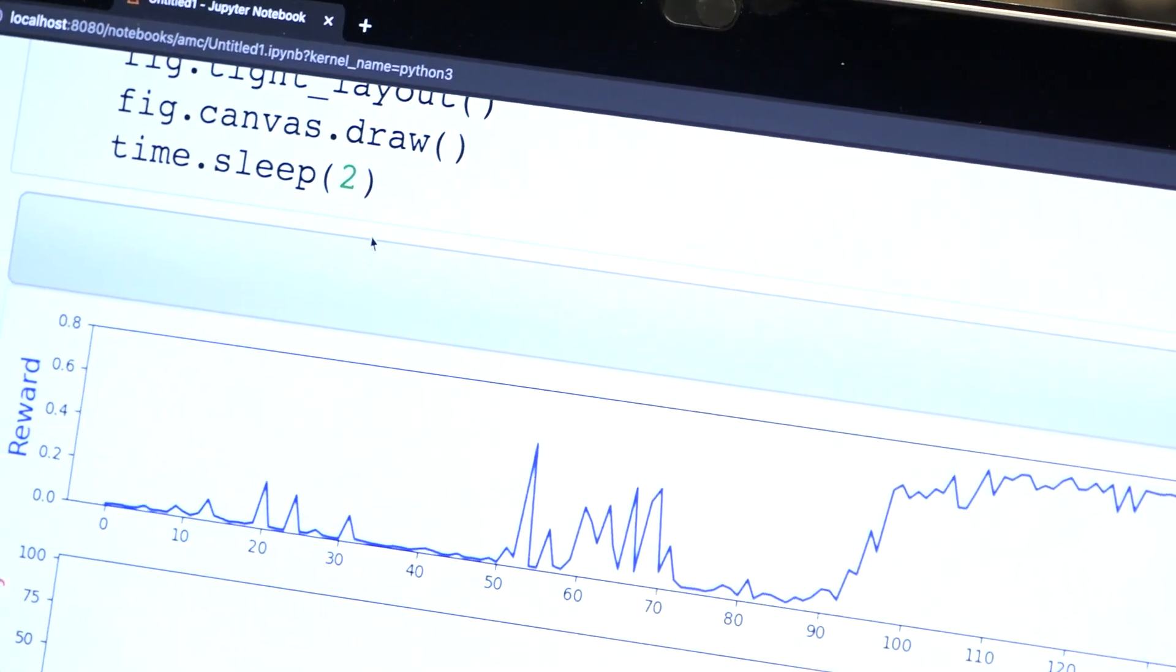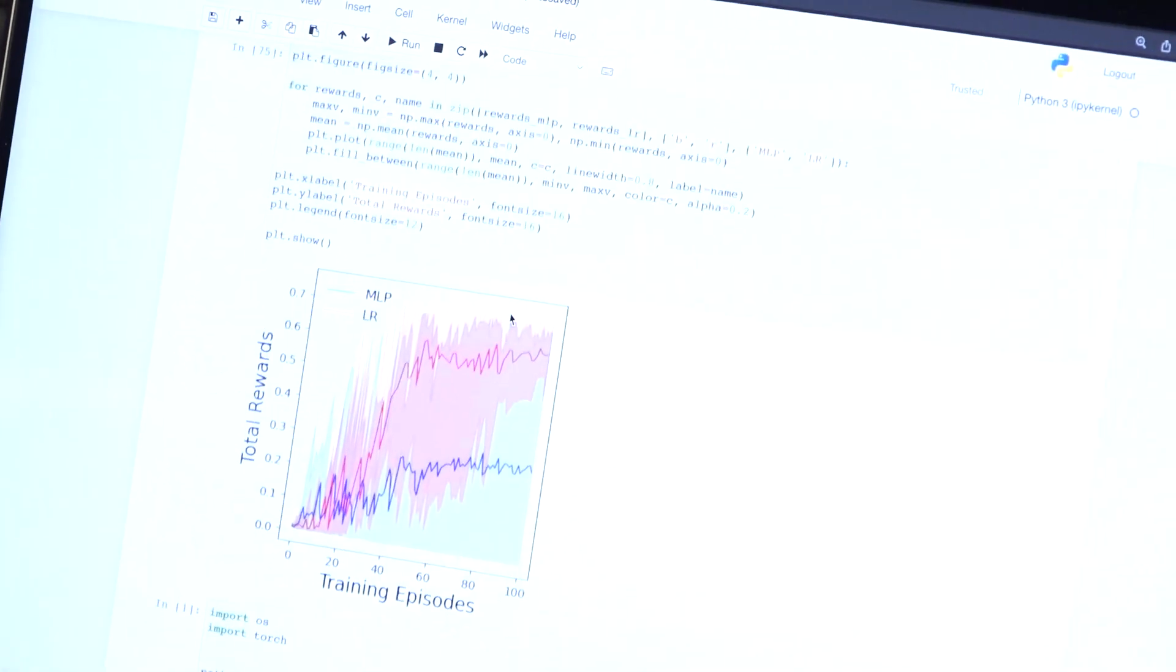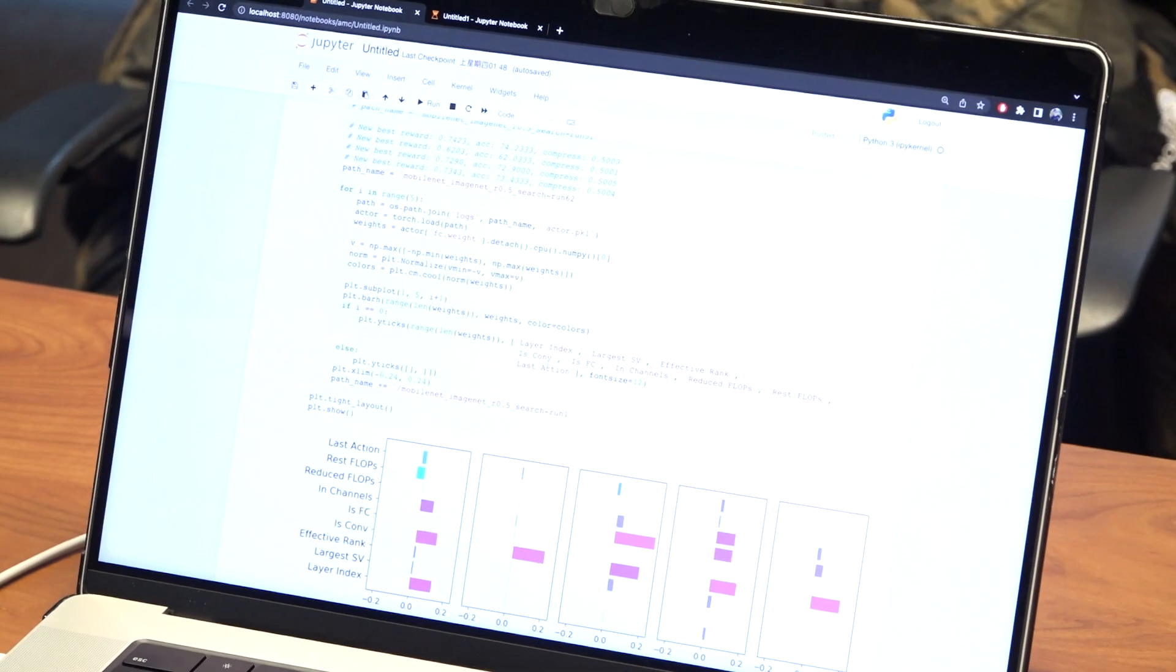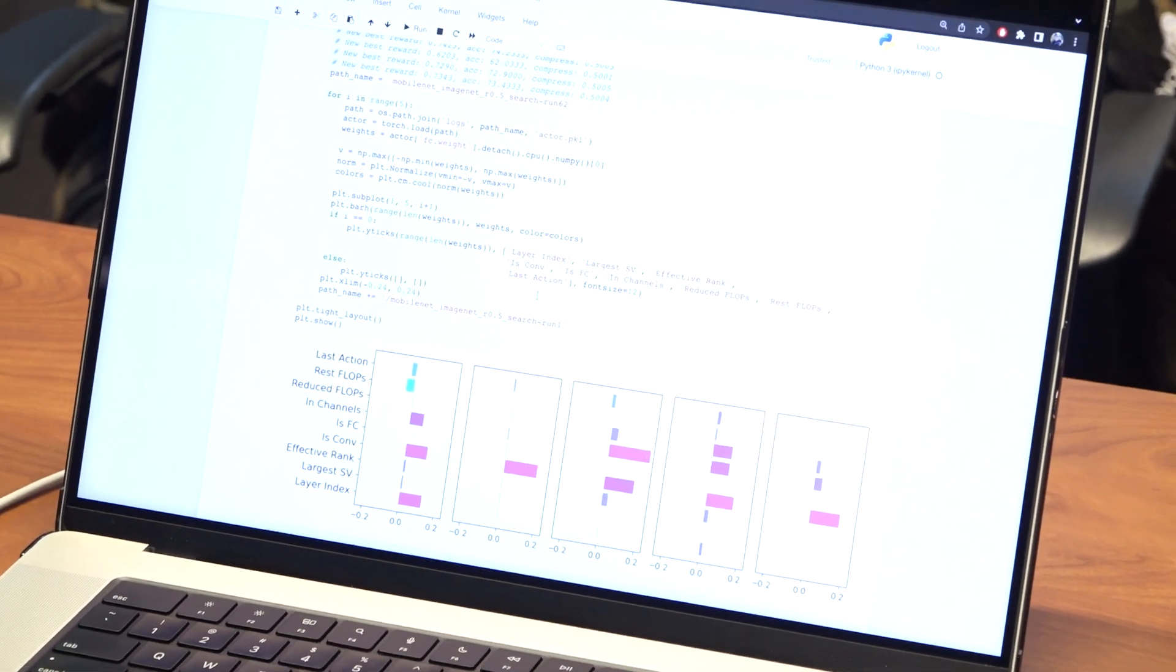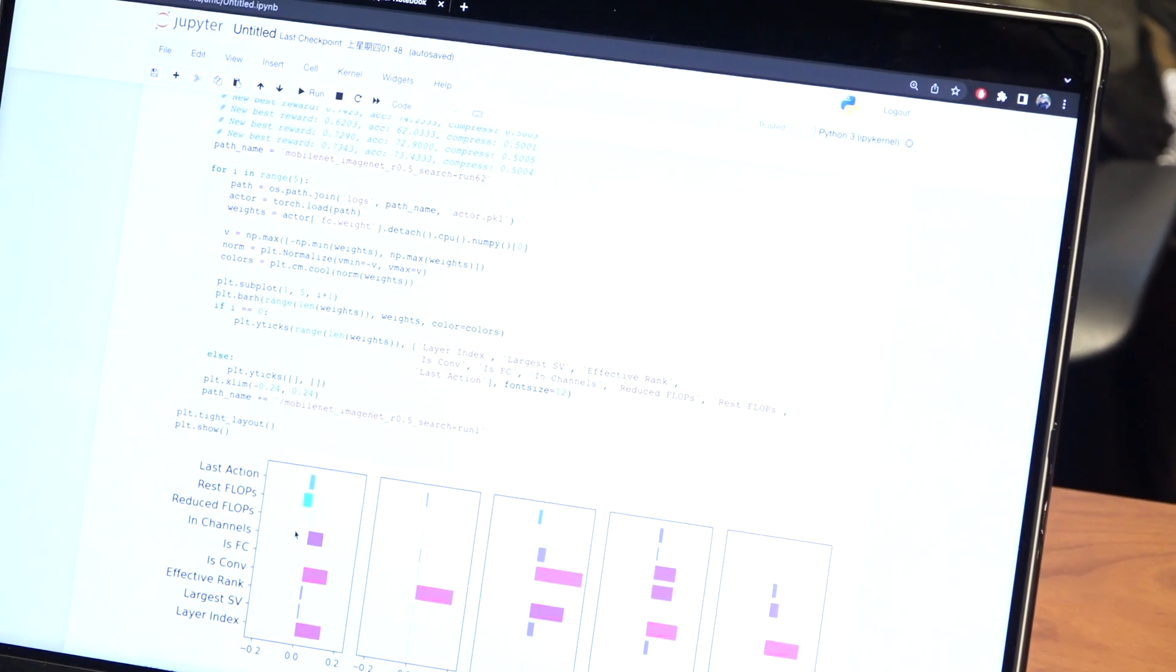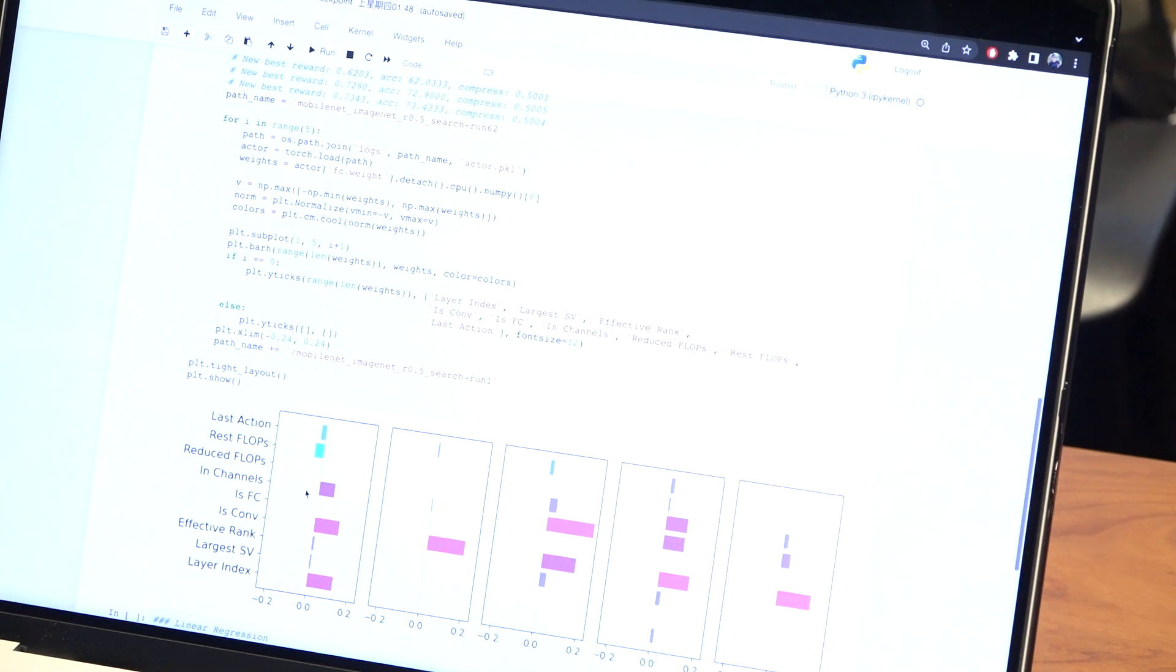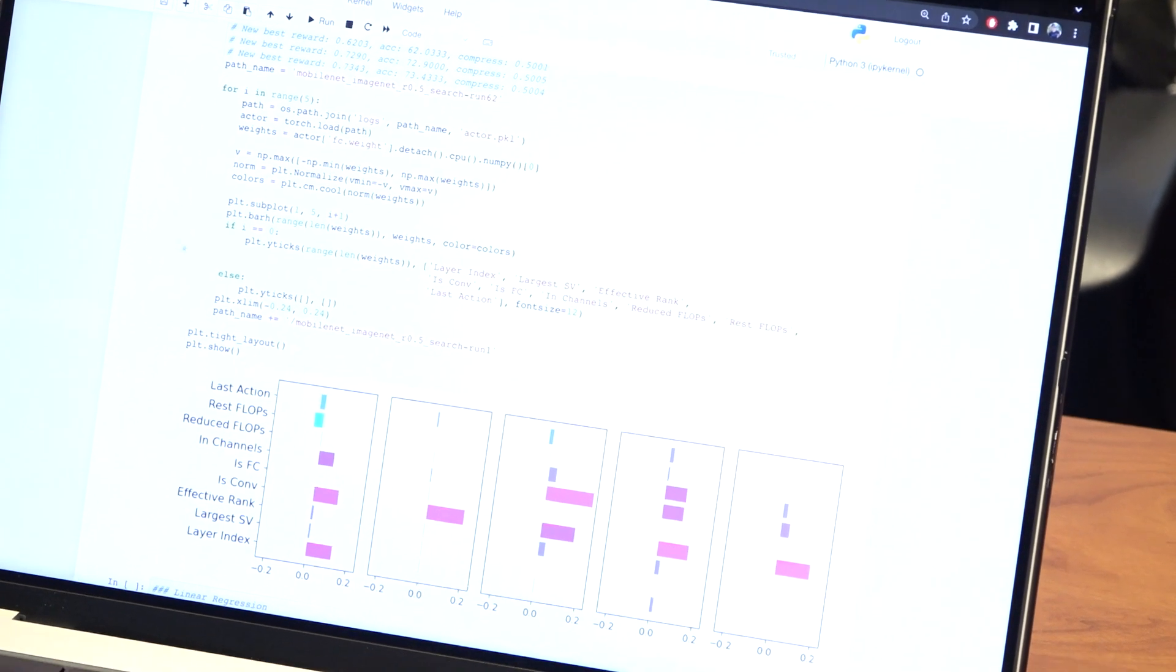explainability. You can see this is the training episodes over a long time. This part is showing the model that we learned, which is from linear regression, so it's an explainable, interpretable model. What we can see here is that the weights of the linear regression are actually the feature importance. This is the result we read from the saved model.